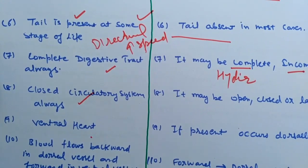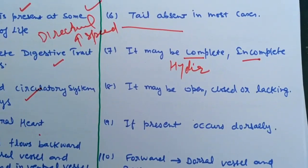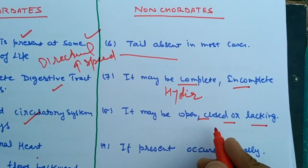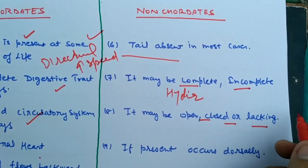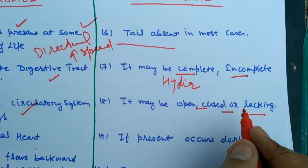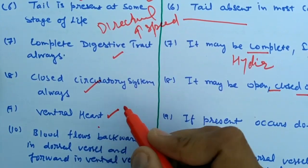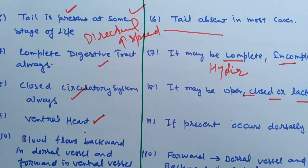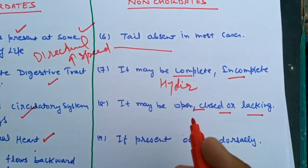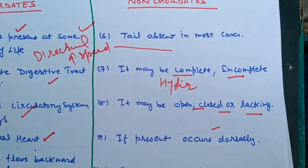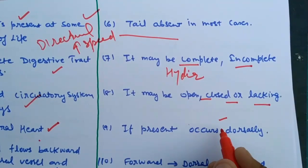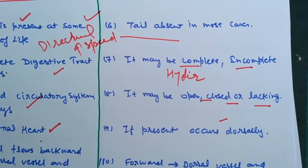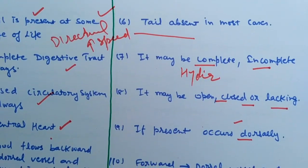In chordates, there is a closed circulatory system — blood flows within vessels, not freely in the coelom. In non-chordates, it may be closed, open, or lacking — Hydra and cylindrates have no blood and no heart, while the cockroach has a heart but an open circulatory system. In chordates, there is always a ventral heart, as the nervous system is on the dorsal side and visceral organs on the ventral side. In non-chordates, the nervous system is on the ventral side, visceral organs are dorsal, and the heart is on the dorsal side.